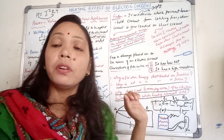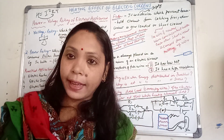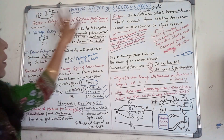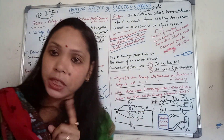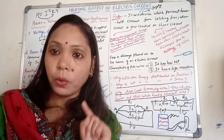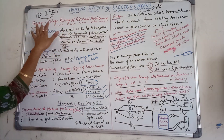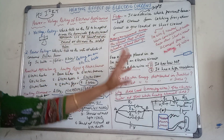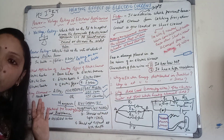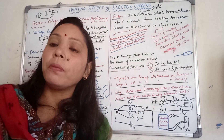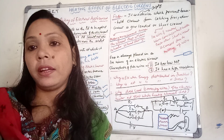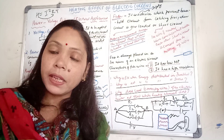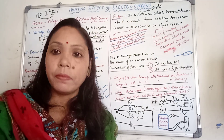Now your work: you have to make a note — not a question-answer format — a note on power and voltage rating of electrical appliances, in the same way as I have done on the board. Prepare a short note in A4 size paper and send it to my WhatsApp number.